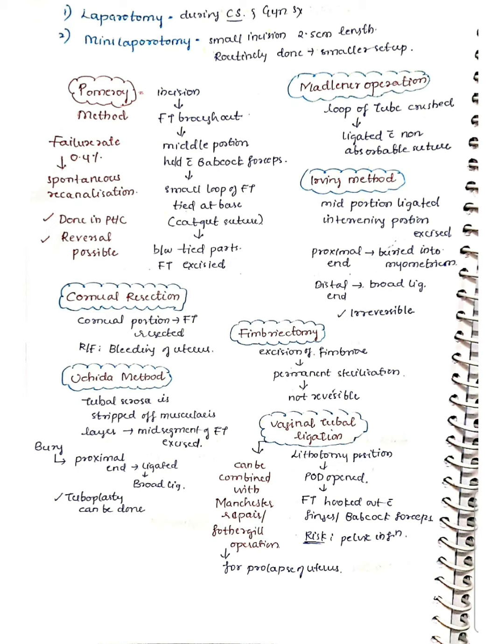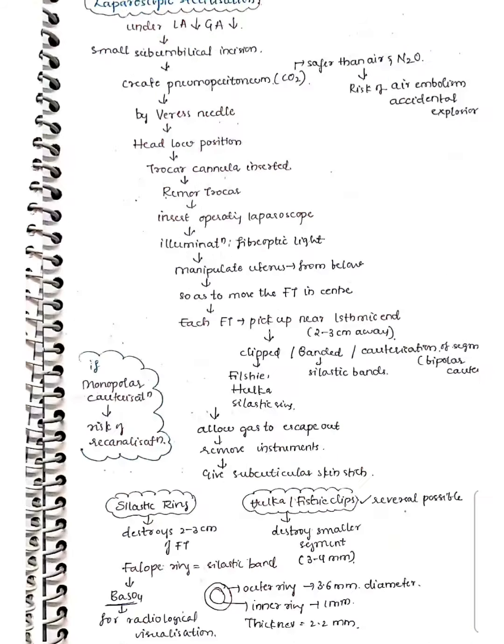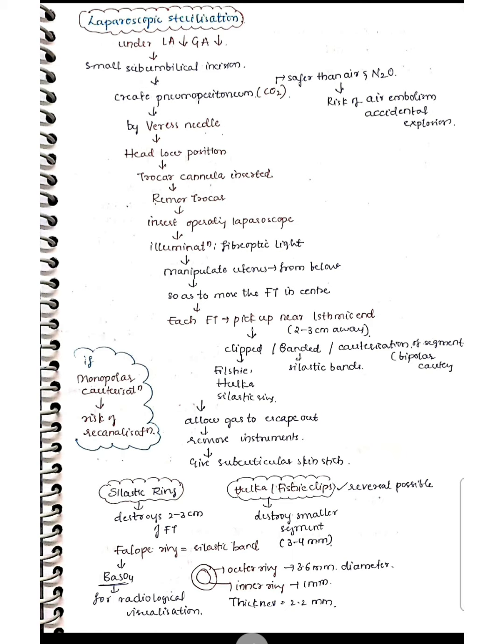In vaginal tubal ligation, the patient lies in the lithotomy position, the pouch of Douglas is opened, and the fallopian tube is hooked out with fingers or forceps. The risks include pelvic infection and higher failure rate. It can be combined with the Manchester or Fothergill's operation for uterine prolapse, which involves cervical amputation and anterior attachment of the cardinal ligament. This method is not commonly done due to its risks.